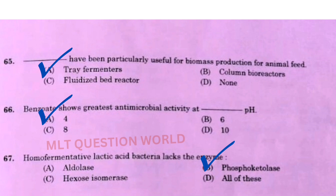Next one: Benzoate shows greatest antimicrobial activity at dash pH — the right answer is option A, pH 4. Next one: Homofermentative lactic acid bacteria lacks the enzyme — the right answer is option B, phosphoketolase.